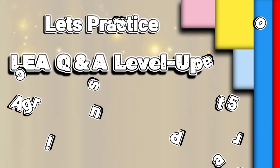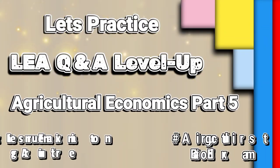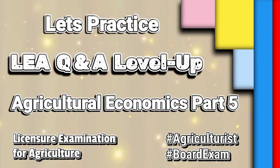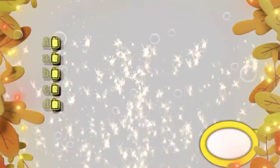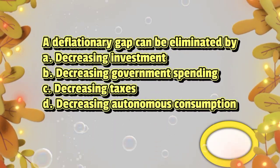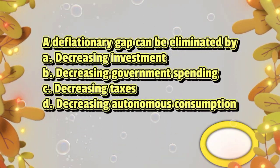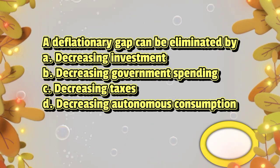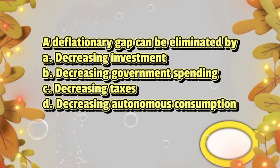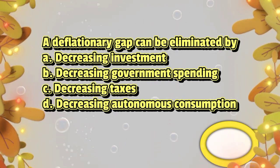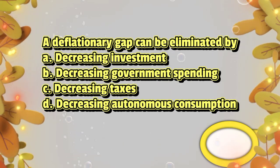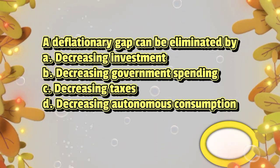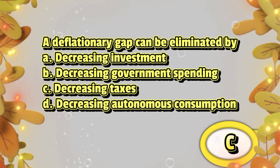Let's practice LEA Q&A Level Up Agricultural Economics Part 5. A deflationary gap can be eliminated by: A. decreasing investment, B. decreasing government spending, C. decreasing taxes, D. decreasing autonomous consumption. The answer is letter C.